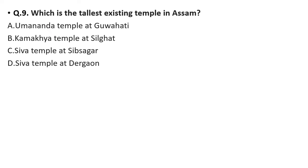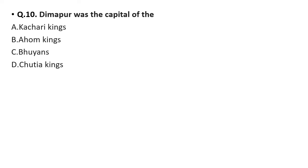Question 9: Which is the tallest existing temple in Assam? Option A: Umananda Temple in Guwahati, option B: Kamakhya Temple in Silghat, Guwahati, option C: Shiva temple at Sivshagar, option D: Shiva temple at Dergaon. The correct answer is option C — the Shiva temple, also known as Sivdol, in Sivshagar.